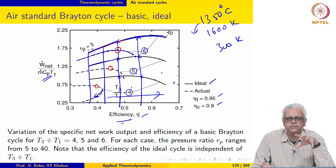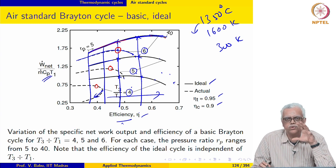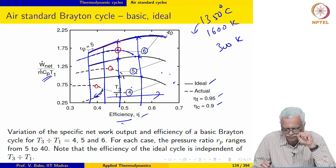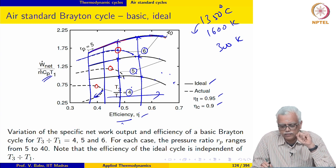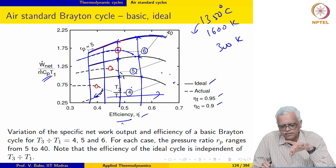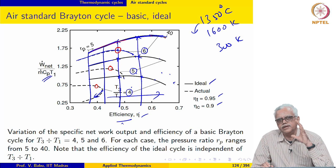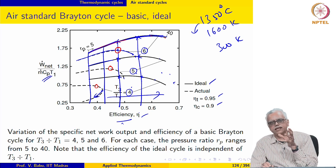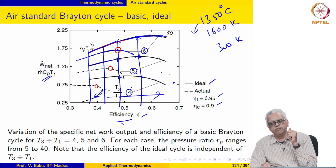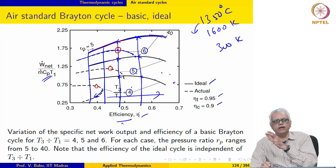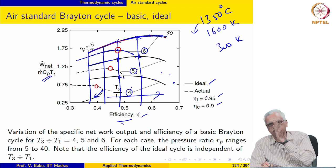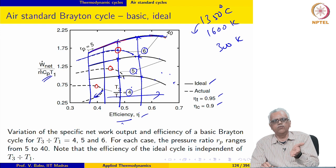The insights obtained from the ideal cycles more or less hold for the real cycle also. The approach we will take with the Brayton cycle is similar to what we did for the Rankine cycle. We will start with the basic cycle, look at the performance metrics — specific work, first law efficiency, second law efficiency, exergy destruction in the components — then identify scope for improvement and improve in a systematic manner. After each improvement, we evaluate the performance to see how it has changed until we end up with the best possible cycle.